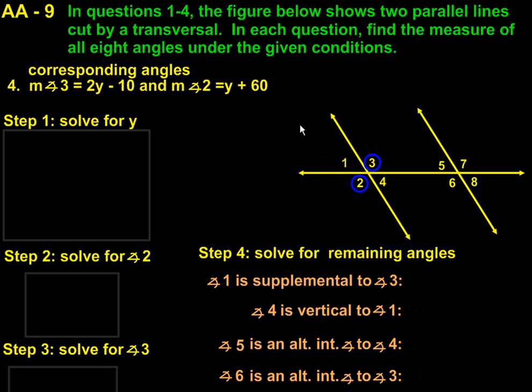So for number four, the conditions are that we have corresponding angles and that the measure of angle three is 2y minus 10 and the measure of angle two is y plus 60. And I highlighted which two we're focusing on for this question.